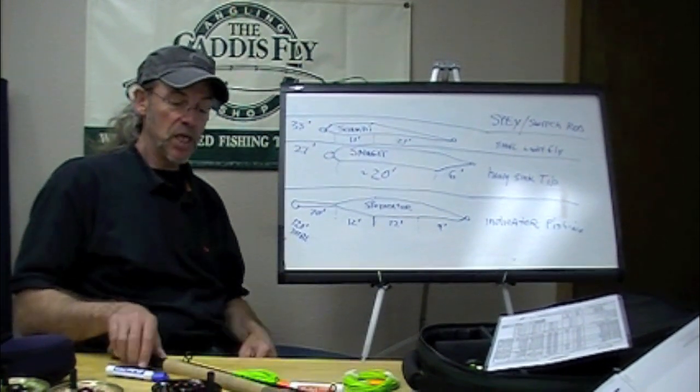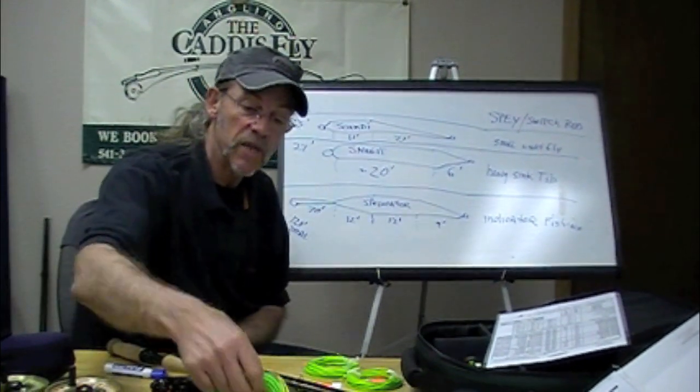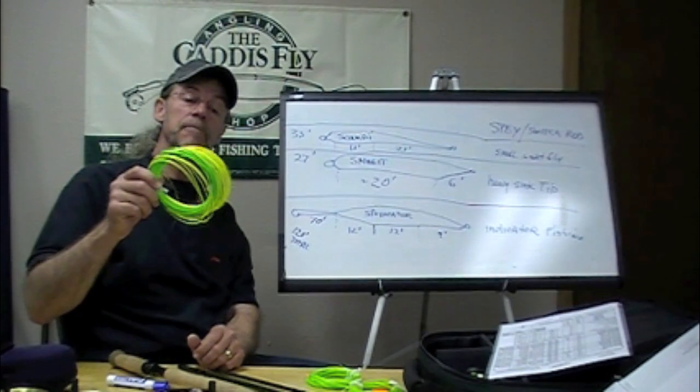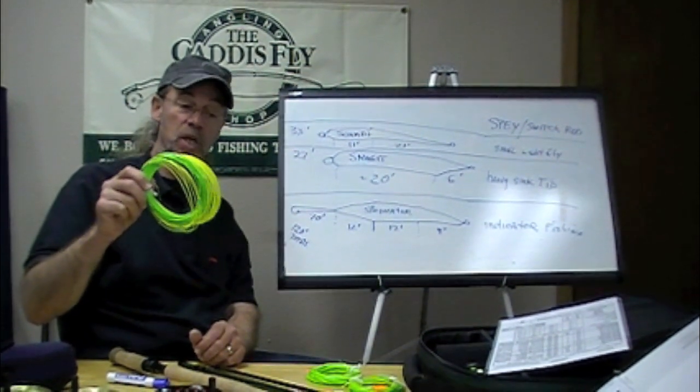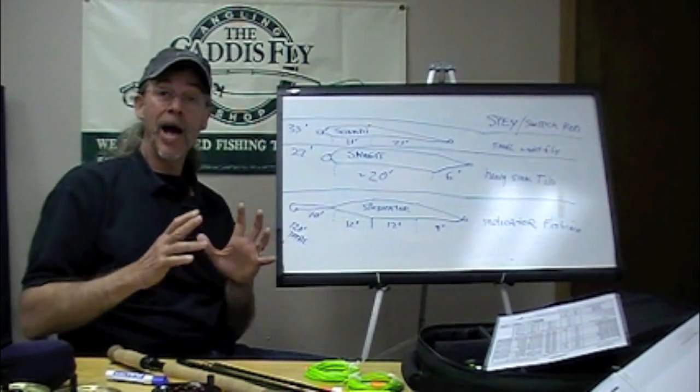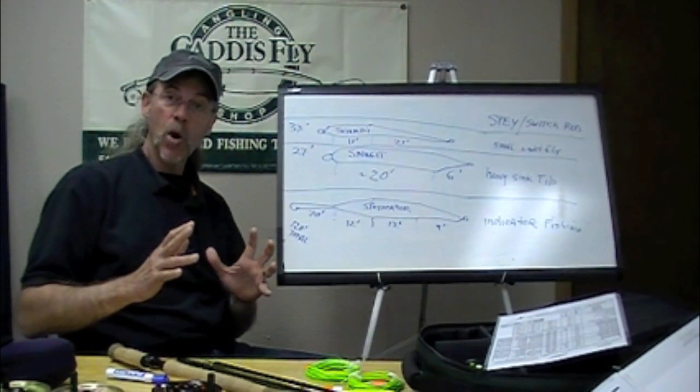And they've been fishing Skagit lines or something like an Airflo 40-plus, which is a floating line, or a Rio Outbound floating line. But those lines didn't really perform quite as well.